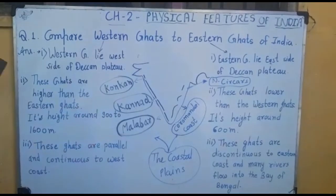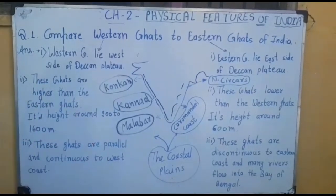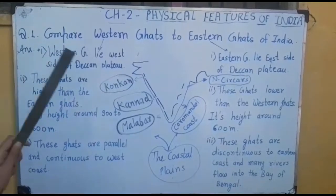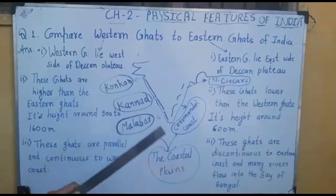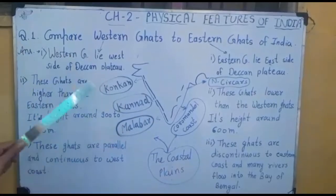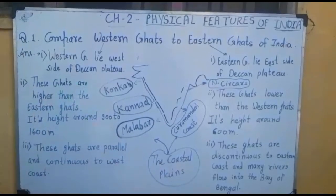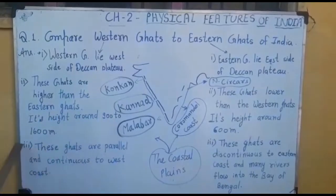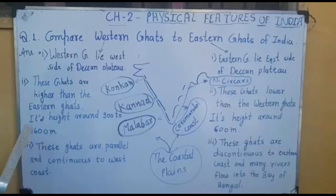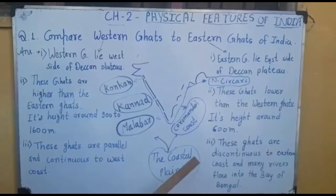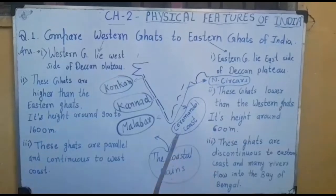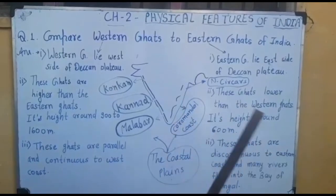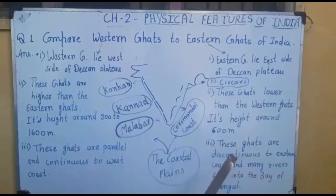The next point is that Western Ghats are higher than the Eastern Ghats because their mountain ranges are higher. Their height is around 900 meters to 1600 meters. Eastern Ghats are lower than the Western Ghats, with a height of around 600 meters.